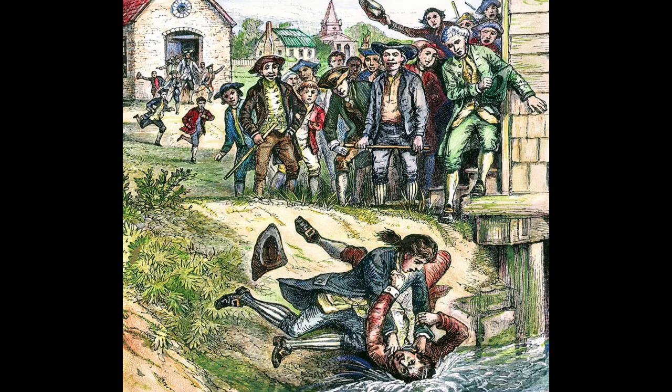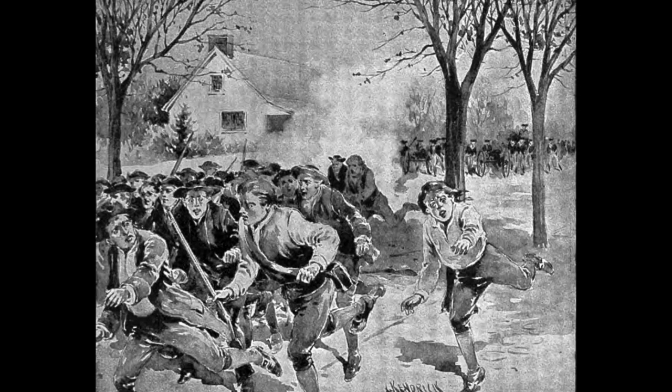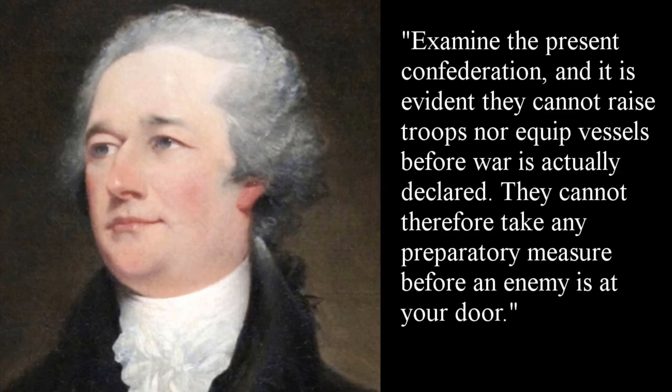In 1787, there was a rebellion in Massachusetts, prompted by the state siding with creditors over poor farmers who were indebted to them. Due to the weak nature of the federal government at this time, it was unable to quash this rebellion, leaving the state of Massachusetts to raise its own army instead. As Alexander Hamilton would later note in an address to Congress, this demonstrated the fundamental inadequacy of the existing framework.